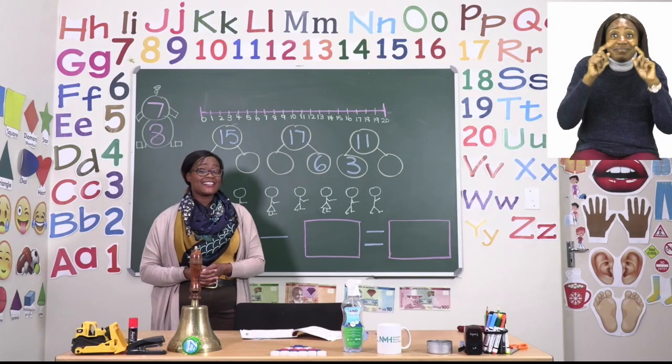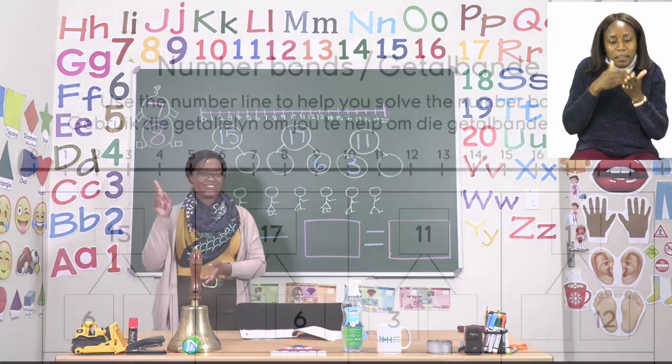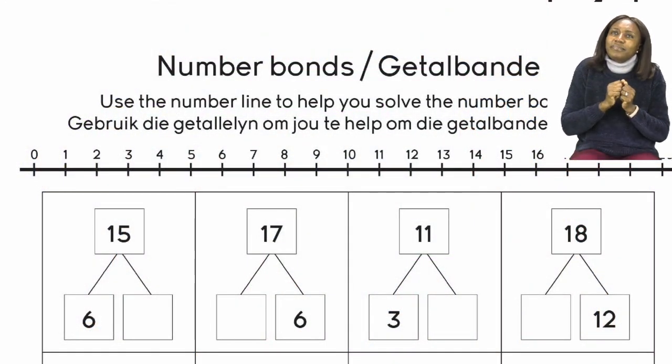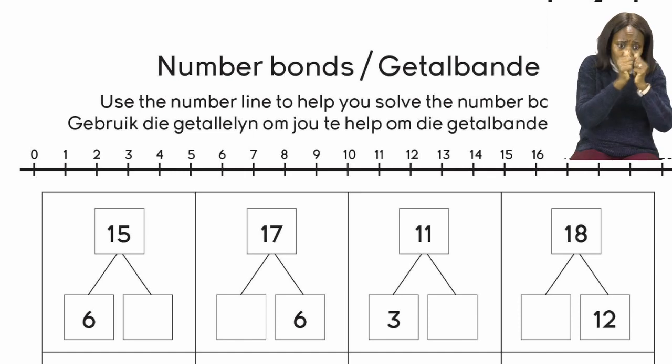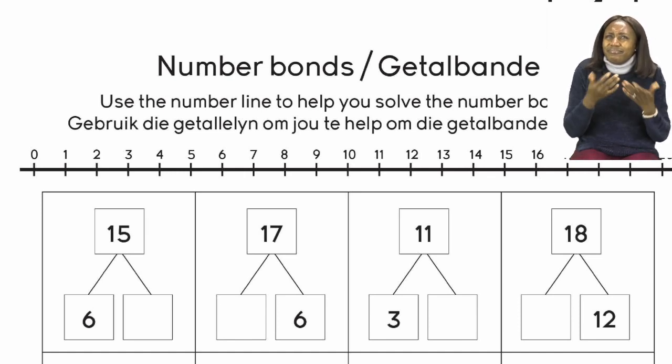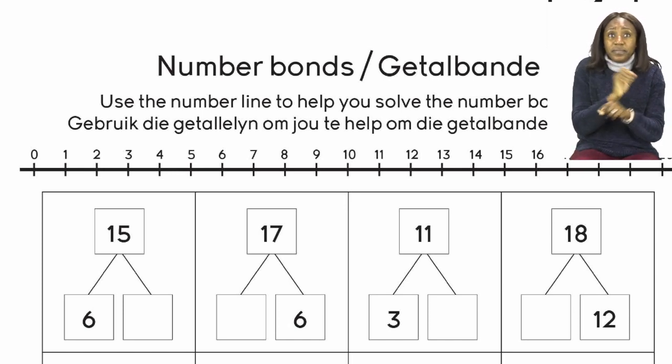For our lesson now boys and girls, let's start on page 7. On page 7, we are going to be doing number bonds. Now the number bonds that we are going to be doing are the ones where we have to find the missing number. Now the top number that you can see is the one that is the total. So we have to find the other number that adds up to the one on top. We are going to do the first three together. This time we are going to be using the number line to help us solve our number bonds. So let's do the first one together.